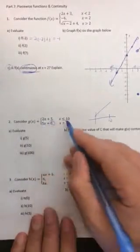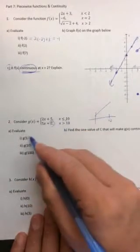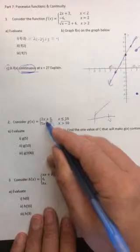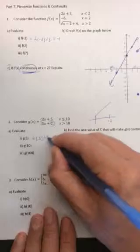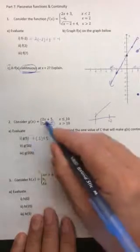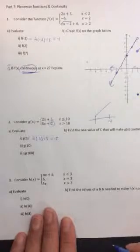g of 5, well, the first thing we need to decide is, is x less than or equal to 10? 5 is less than 10. And so we're on this part of the graph. So it's going to be 2 times 5 plus 5. We're just putting in 5 for x, which is 15. So g of 5 is 15.